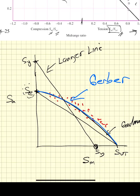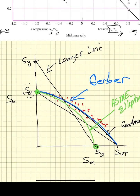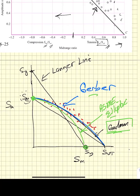The ASME came up with a simple elliptic equation connecting the endurance limit on the stress amplitude axis to the yield strength on the mean stress axis — the ASME elliptic equation. All of these become mean stress correction factors: the Gerber line, the Goodman line, and the ASME elliptic. The Goodman is the one most people use because it's simple and easy to understand.